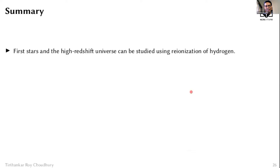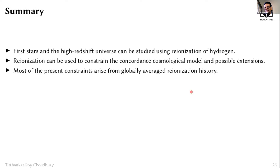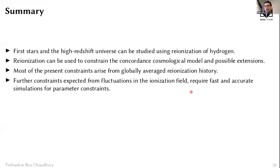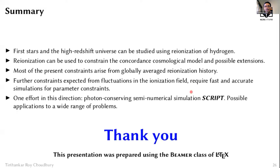To summarize: the high-redshift neutral hydrogen universe can be studied using hydrogen reionization, and this is important for studying the cosmological model and its possible extensions. Most present constraints arise from globally averaged reionization history, but we expect further constraints from fluctuations in the ionization field, which require fast and accurate numerical simulations. Our contribution in this direction includes the COSMO REION MC code for analytical parameter estimation and the SCRIPT semi-numerical simulation code, which is publicly available.